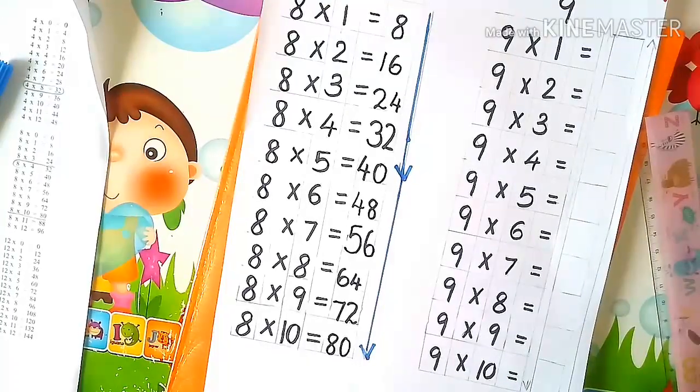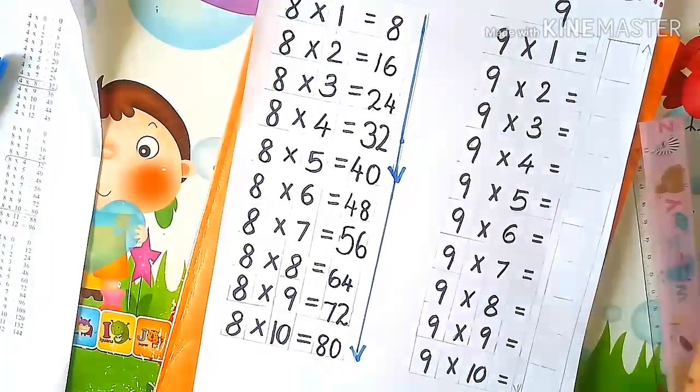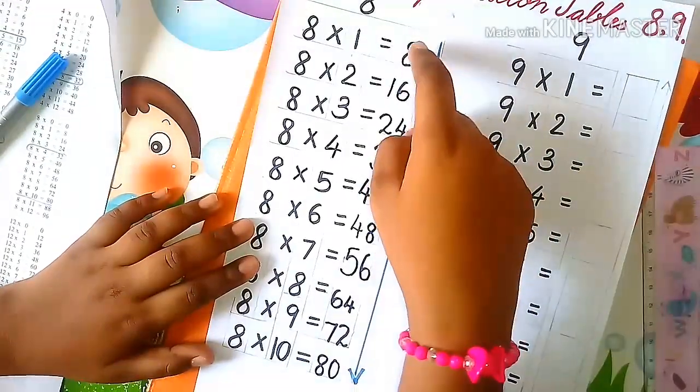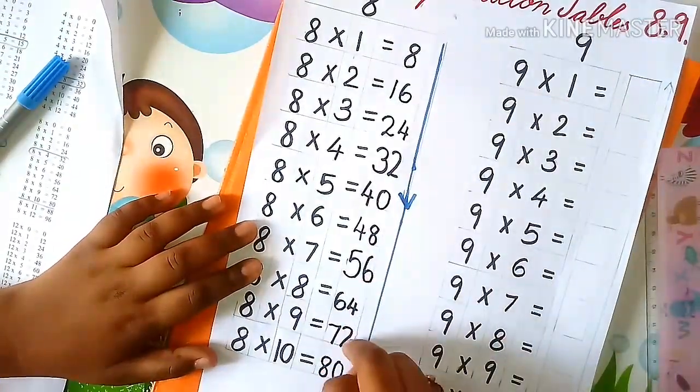Then write 4, 5, 6, 7, 8. Then you have to repeat the same pattern we did here: 8, 6, 4, 2, 0.